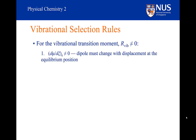The first selection rule is the gross selection rule. This states that the gradient of the dipole moment with respect to the displacement at the equilibrium position must be non-zero. This means that the dipole must change with displacement at the equilibrium position. As the vibration goes through the equilibrium position, the dipole moment of the molecule must be changing. That does not mean it has to have a permanent dipole moment.